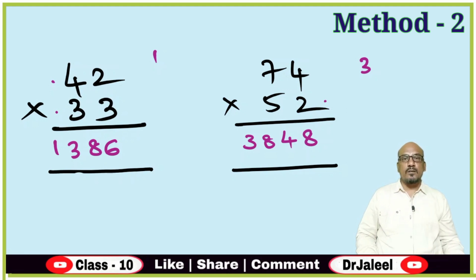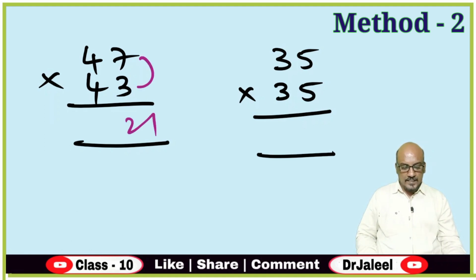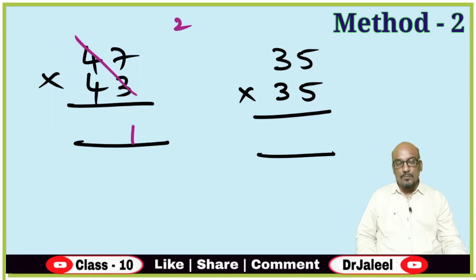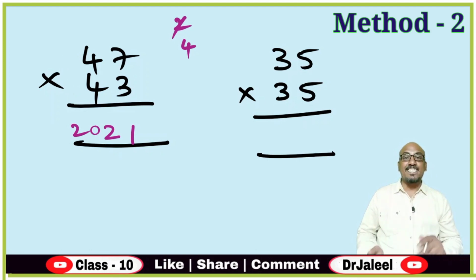This is how we can use this method to get the product of a two-digit number and another two-digit number. Can we also follow this method for numbers like 35 squared or 47 × 43? Yes, because this is a universal method. For example, doing 47 × 43 with Method 2: 3 × 7 is 21, write 1 carry 2; cross multiplication gives 4 × 3 + 4 × 7 = 12 + 28 = 40, plus 2 is 42, write 2 carry 4; left side 4 × 4 is 16 plus 4 is 20. Same answer, but it is more time-consuming. So wherever there is a chance, use the first method; if not, use the second method.